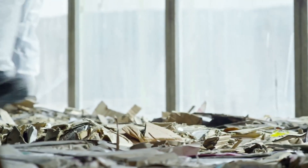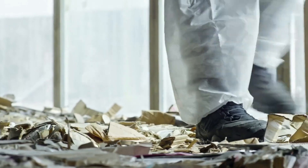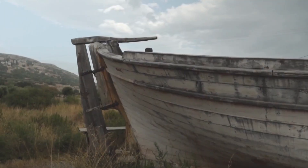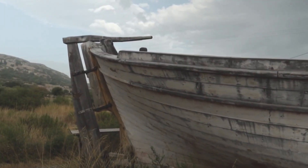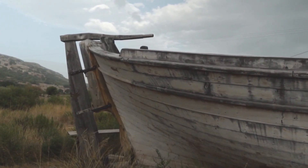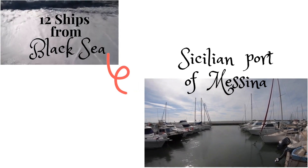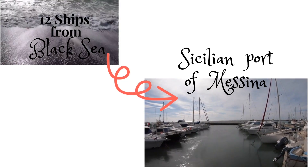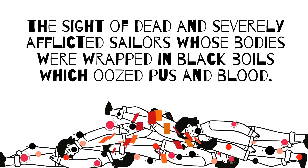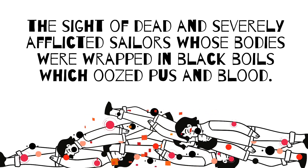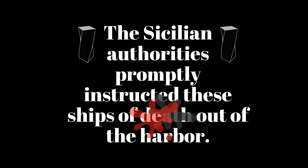In the mid-1300s, a destructive pandemic of the bubonic plague, called the Black Death, struck Europe and Asia. It appeared in October of 1347 in Europe with the docking of 12 ships coming from the Black Sea at the Sicilian port of Messina. People who witnessed this were petrified at the sight of dead and severely afflicted sailors whose bodies were wrapped in black boils which oozed pus and blood. The Sicilian authorities promptly instructed the ships of death out of the harbour.